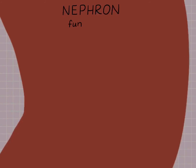This word is where the term nephrologist comes from. A nephrologist is a kidney doctor, and the nephron is the functional unit of the kidney. They're very tiny, so there are about a million in each kidney.